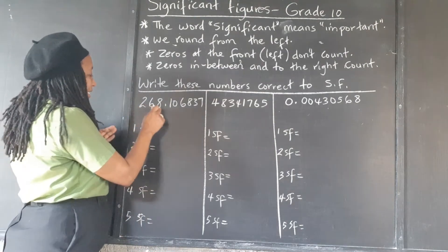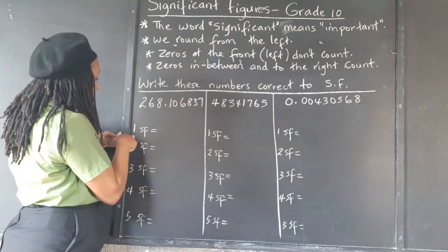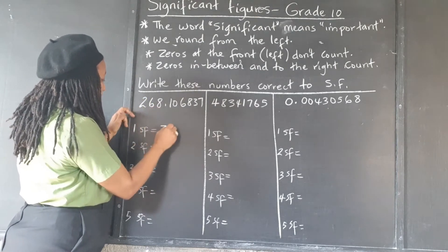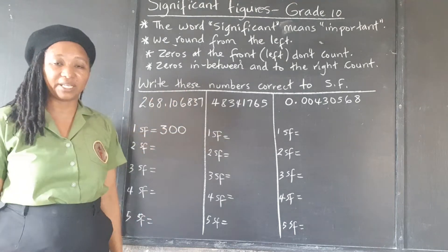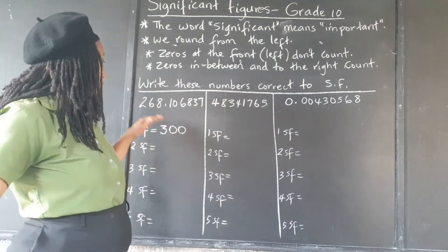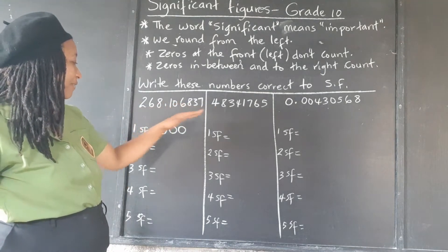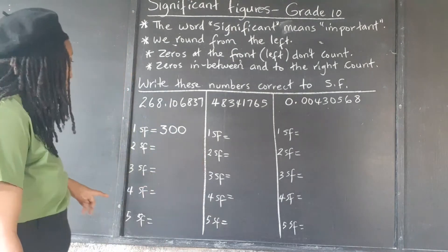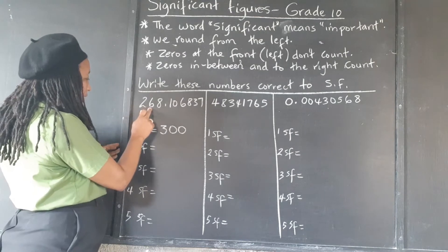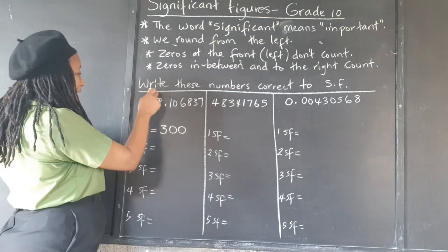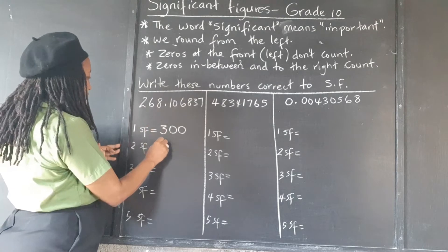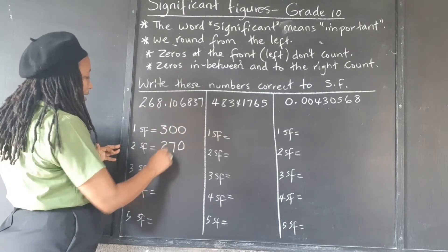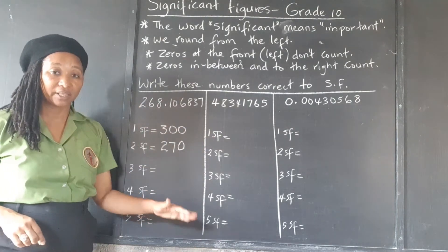So 268 to one significant figure — we add one to the two, that's three. Fill the whole number places with zeros, ignore the rest of the decimal. So 268.1068337 correct to one significant figure is 300. For two significant figures, that's one, two — the next digit is eight, so we add one to the six, giving us 270. The zero holds the remaining place and we ignore the decimals.